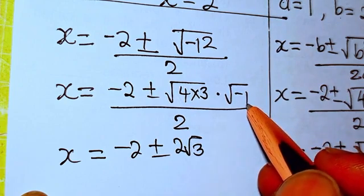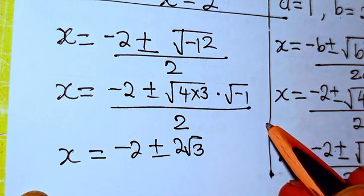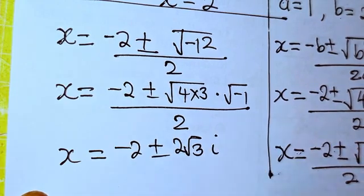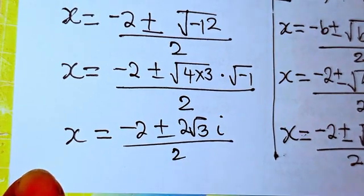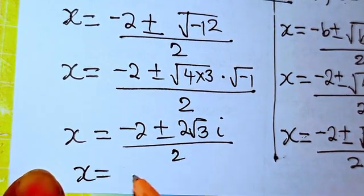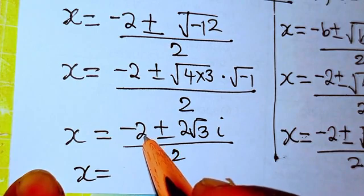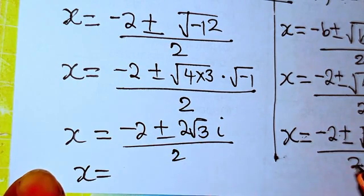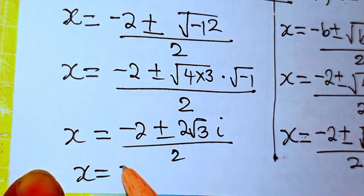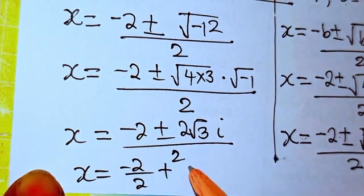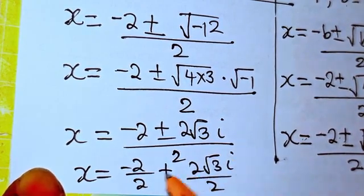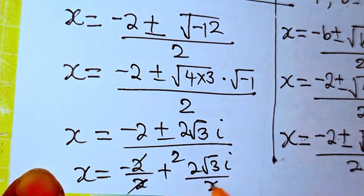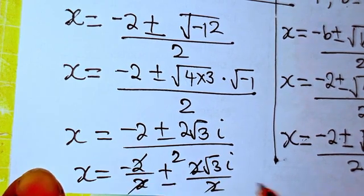The square root of minus 1 is i, in the complex plane. Dividing by 2, we can cancel the 2s: minus 2 over 2 gives minus 1, and 2 root 3 i over 2 gives root 3 i. Don't forget your plus or minus.